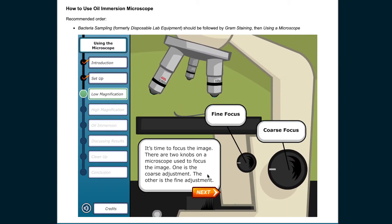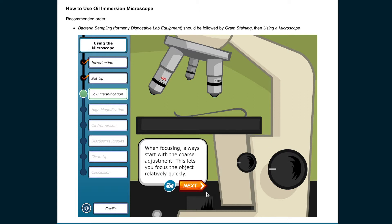It's time to focus the image. There are two knobs on a microscope used to focus the image. One is the coarse adjustment. The other is the fine adjustment. When focusing, always start with the coarse adjustment. This lets you focus the object relatively quickly.